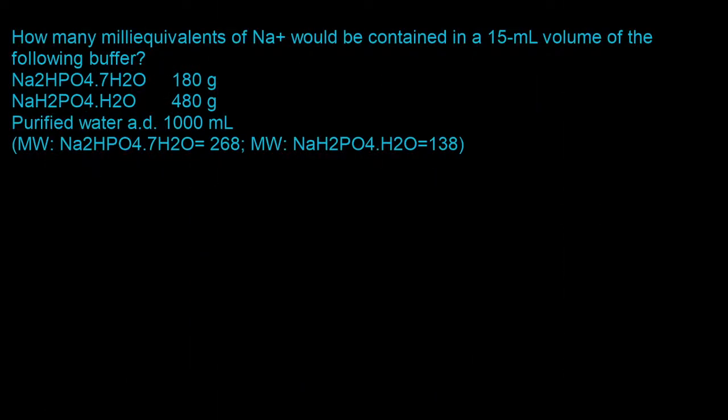How many milliequivalents of sodium ion will be contained in a 15 milliliter volume of the following buffer? You have sodium phosphate dibasic heptahydrate — 180 grams — and sodium phosphate monobasic monohydrate — 480 grams — in a total volume of 1,000 milliliters. The molecular weights of both ingredients are also provided.